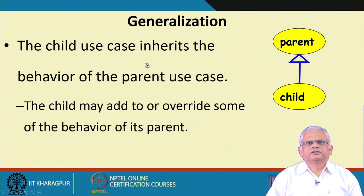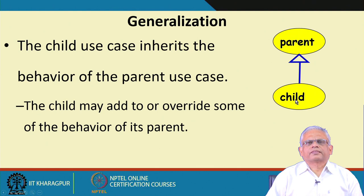For generalization, we represent it using an arrow. One use case is split into two: the parent and the child. The parent is the base or simple use case and the child is the more complicated use case. Some part of the child is already present in the parent and is inherited — we do not repeat it in the child; it is automatically inherited by the child use case.